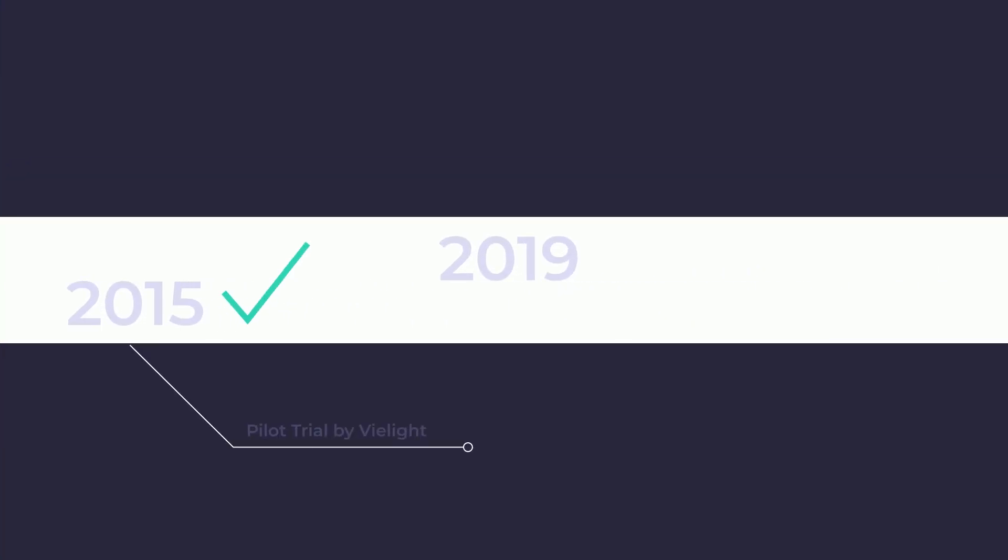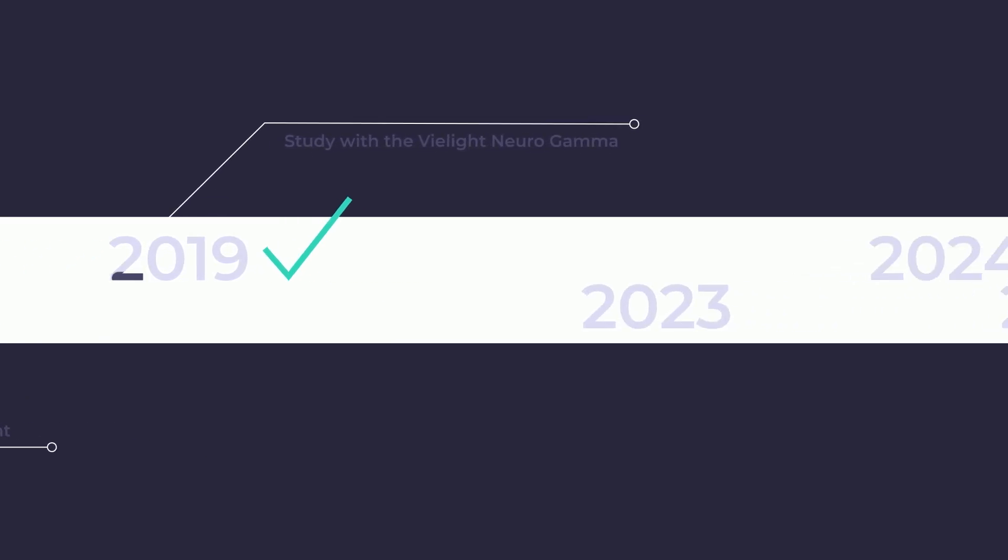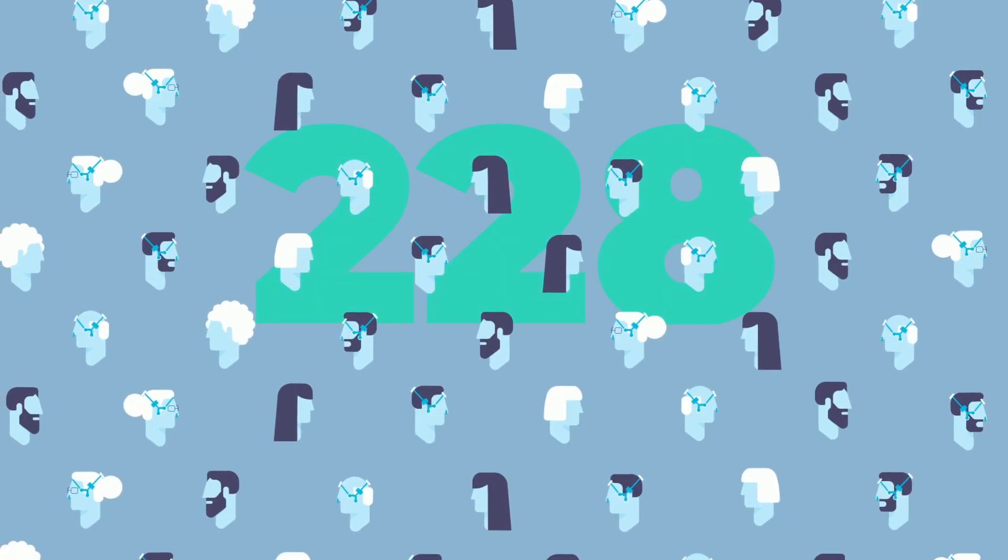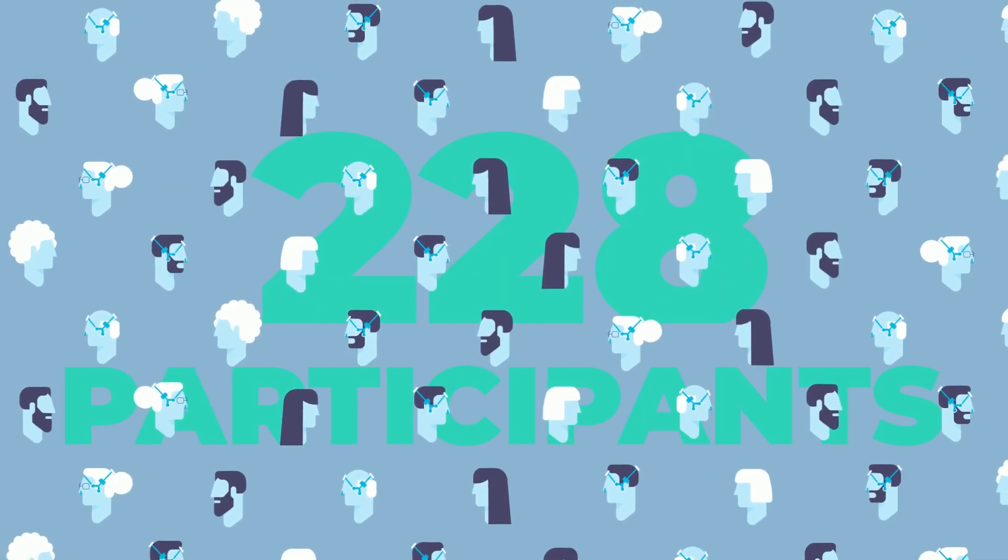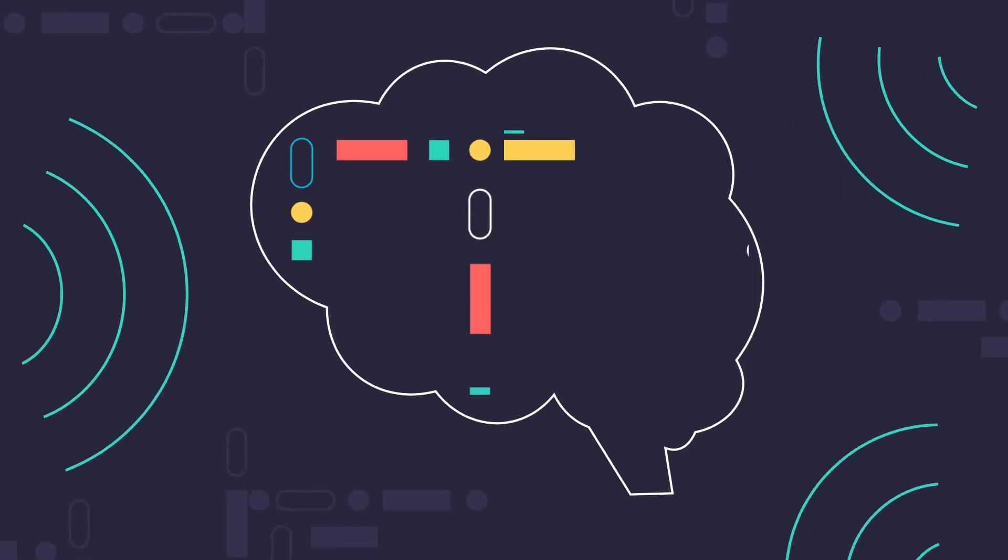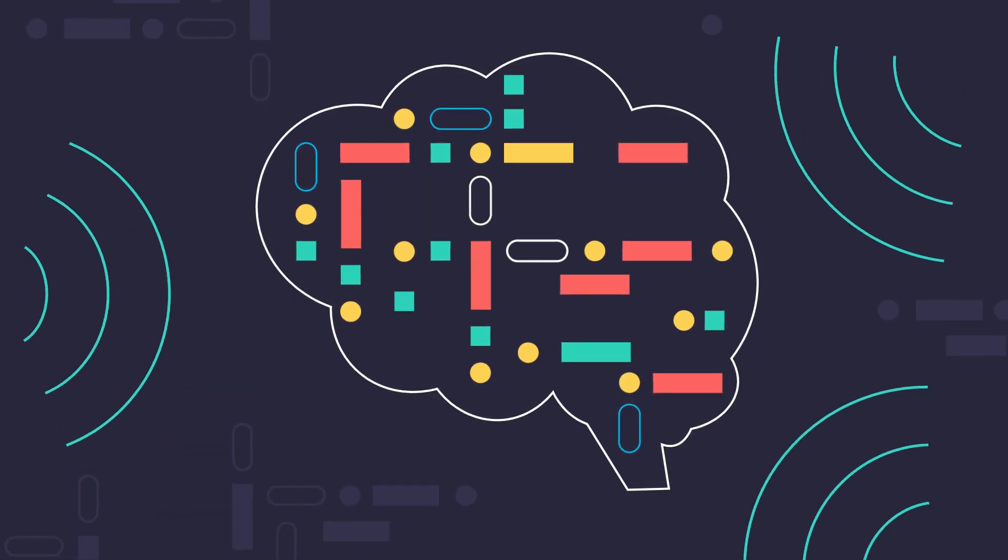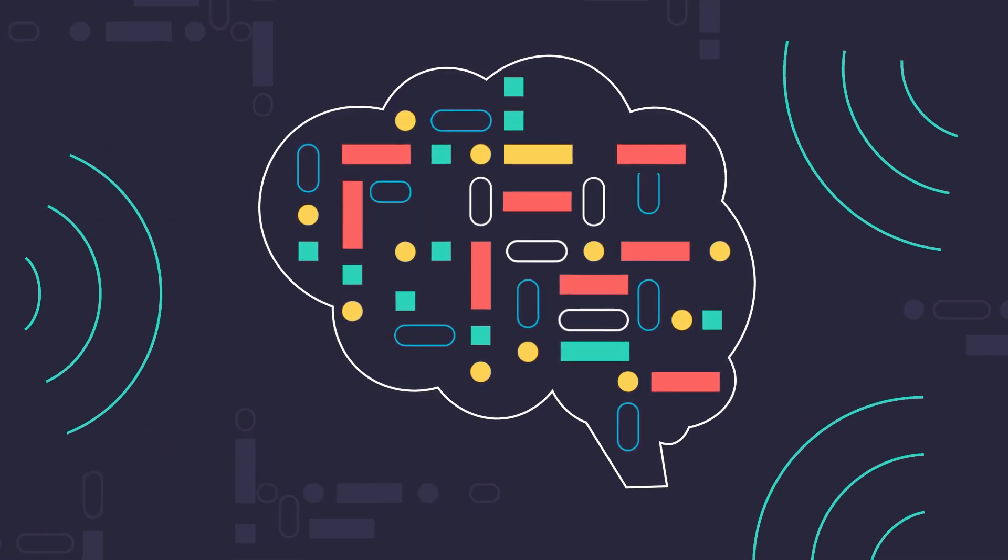This study not only validated the groundbreaking 2015 pilot trial, but also paved the way for V-Lite to engage in more rigorous clinical trials to validate the product efficacy, such as a 228-participant pivotal clinical trial. With no adverse effects reported, brain photobiomodulation may be a promising avenue to enhance the quality of life for those facing dementia.